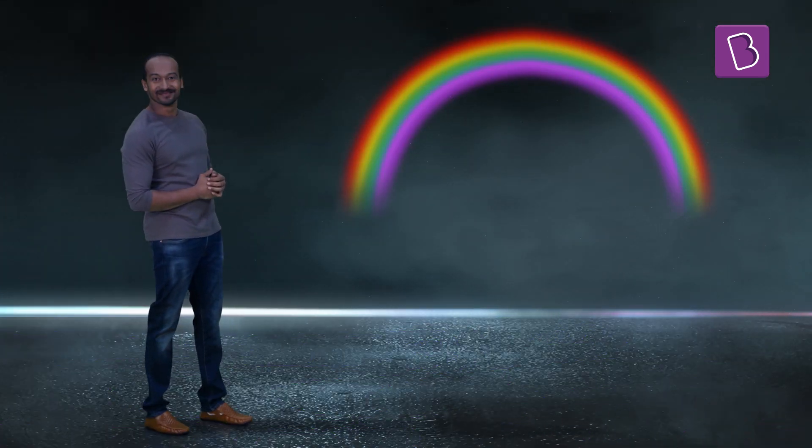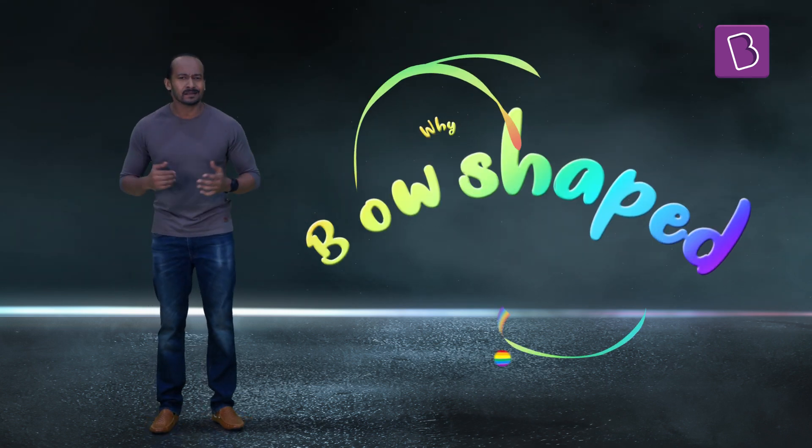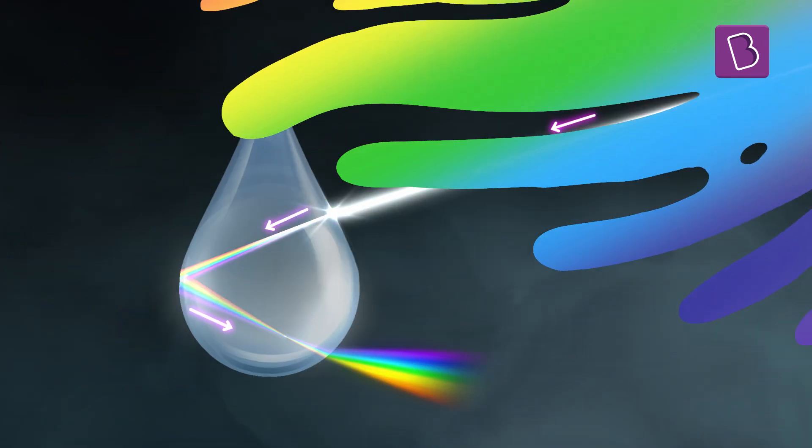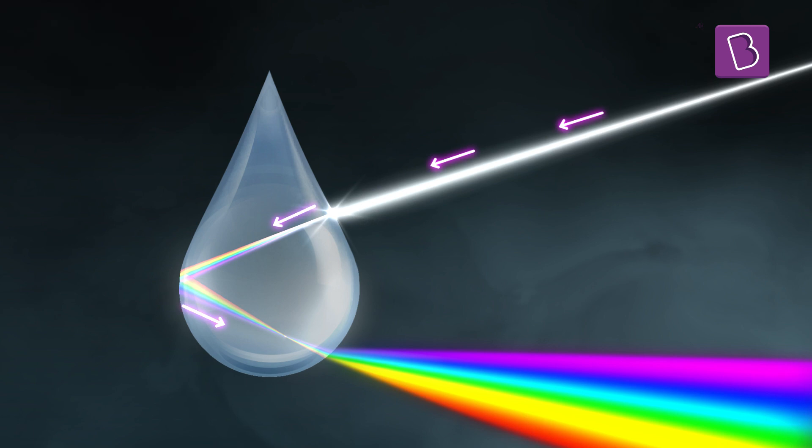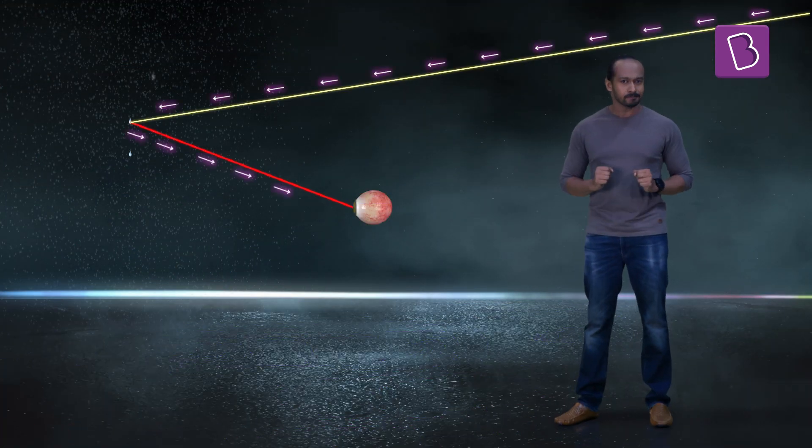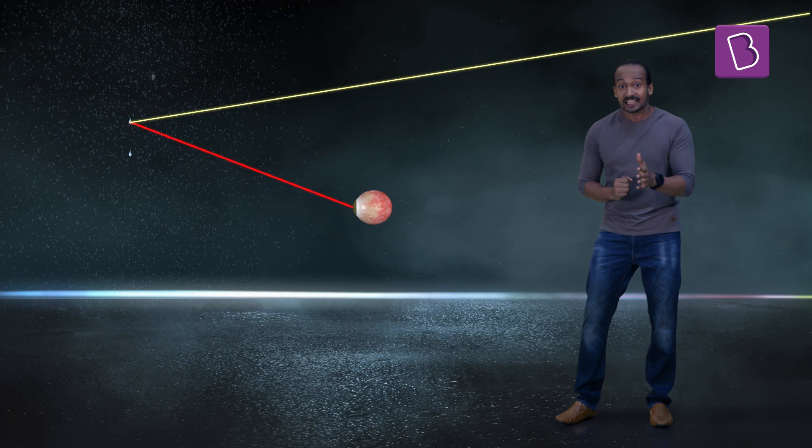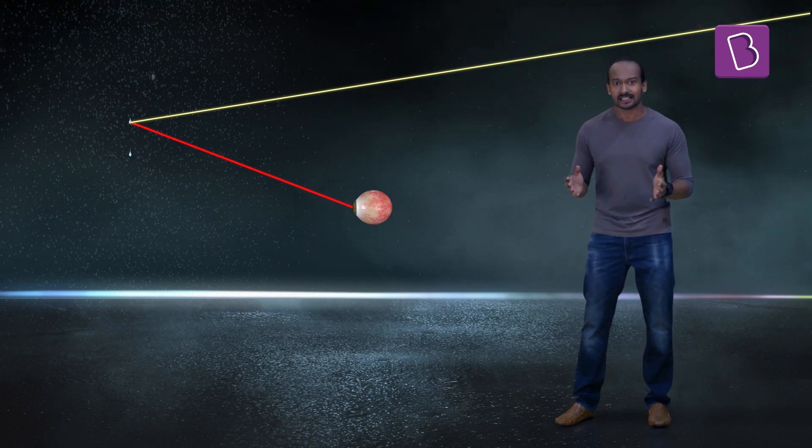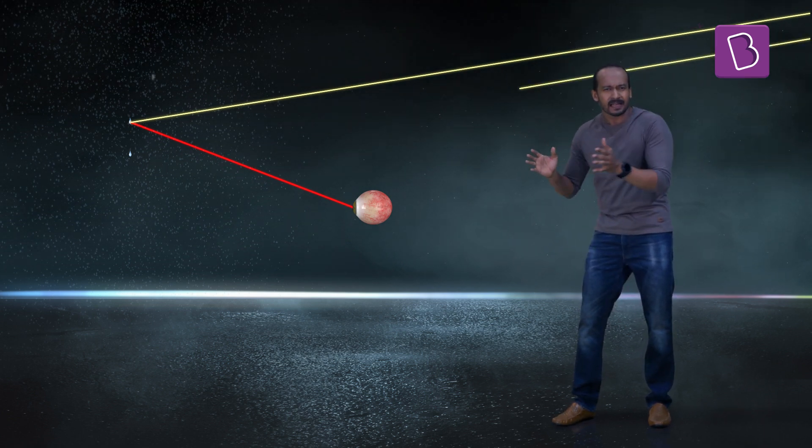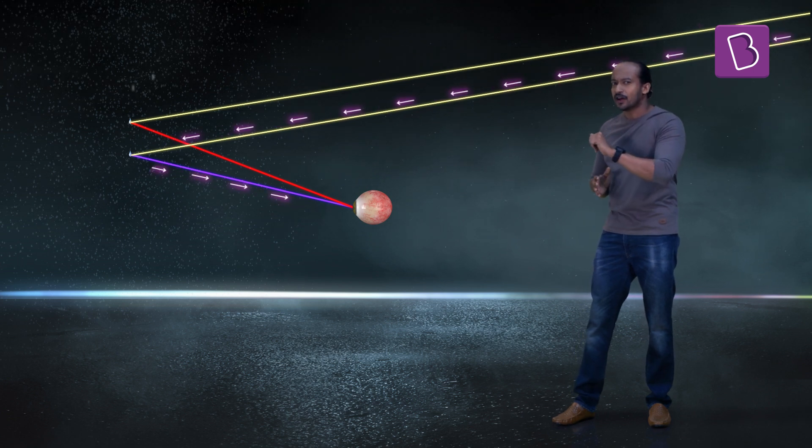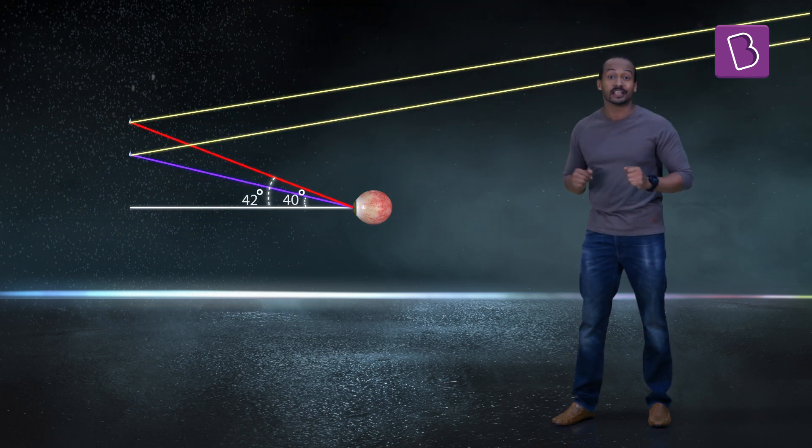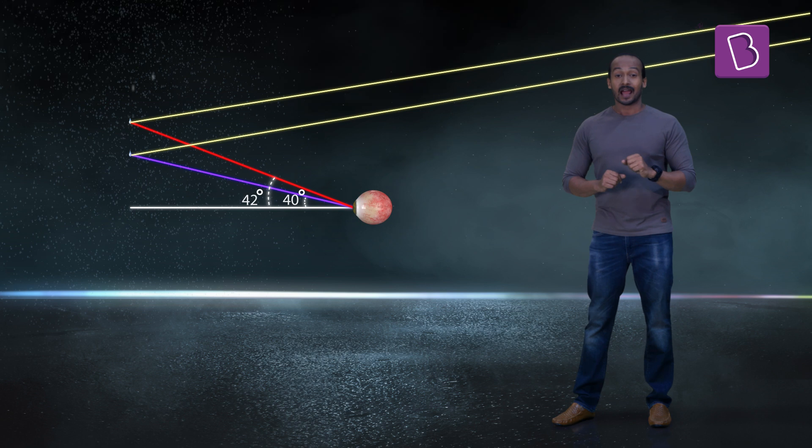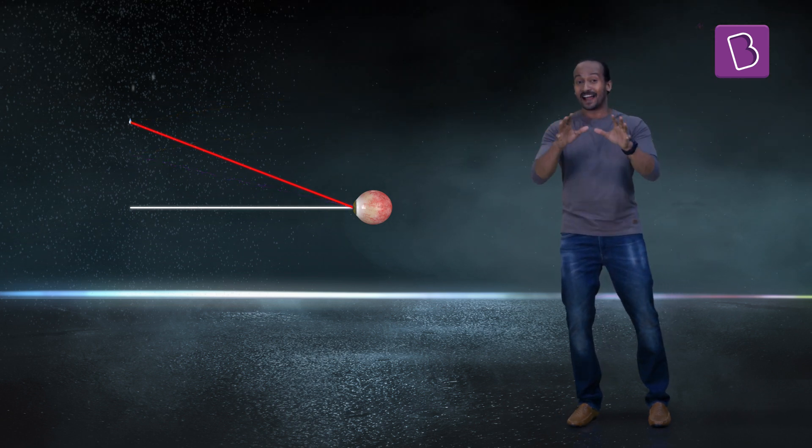But why is it bow-shaped? Sunlight hits the droplet at a special angle, and split rays will also leave at a fixed angle. Analyzing the special angle of the sun rays, the angle of the spectrum can be calculated, and it comes out to 40 to 42 degrees for the entire spectrum.